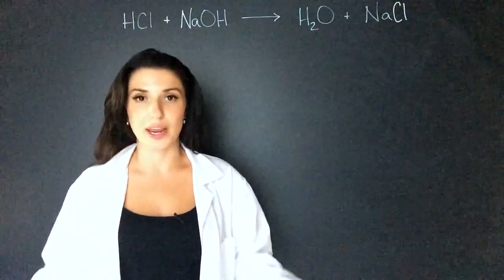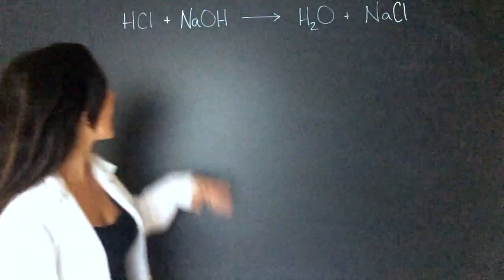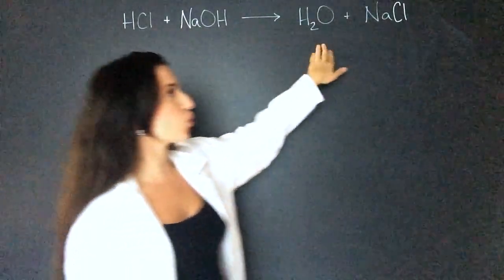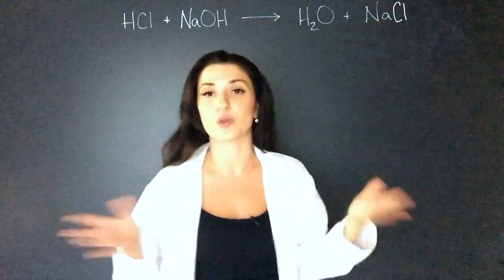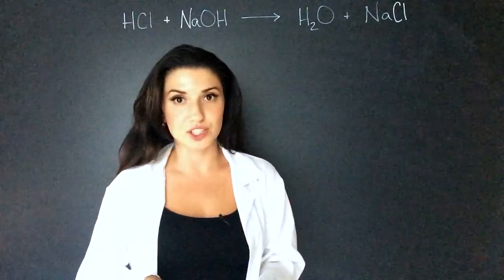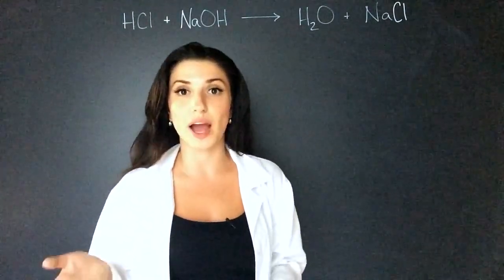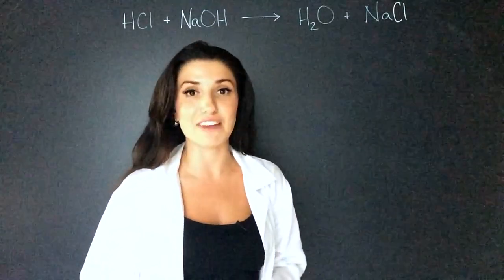First thing we do is write out the formula. So I have hydrochloric acid with sodium hydroxide, giving us water and sodium chloride or salt. Now we have to make sure this is balanced. If you want to review how to balance equations, I'll link that video here.